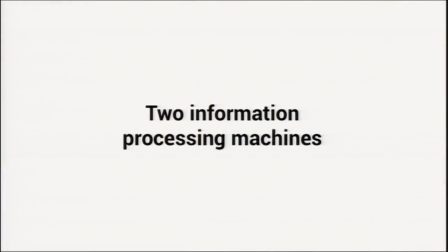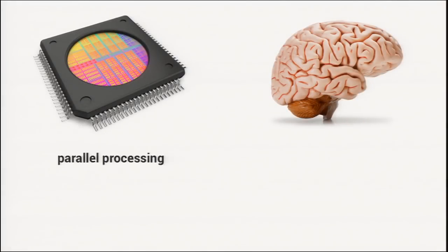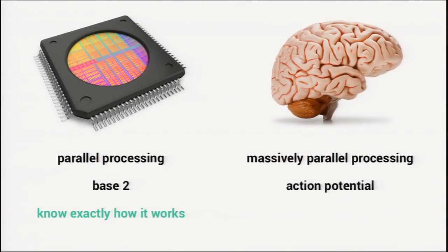It's not entirely true that people aren't controllable, because really what we're fundamentally dealing with is two information processing machines — the CPU and the brain. In some ways they're very similar: they're both doing computation. One is parallel processing, the other is massively parallel. One is base two, the other is based on action potential. So you have dramatically more computational power.